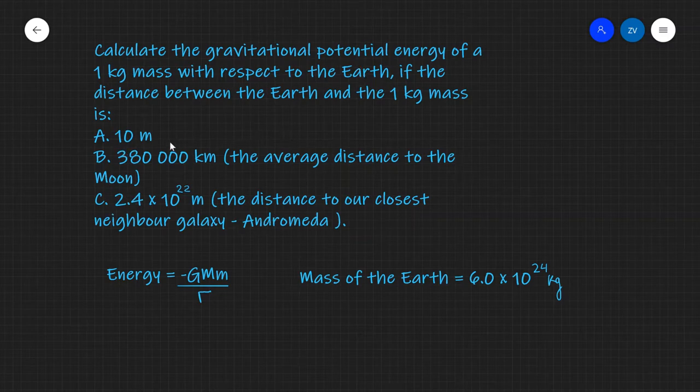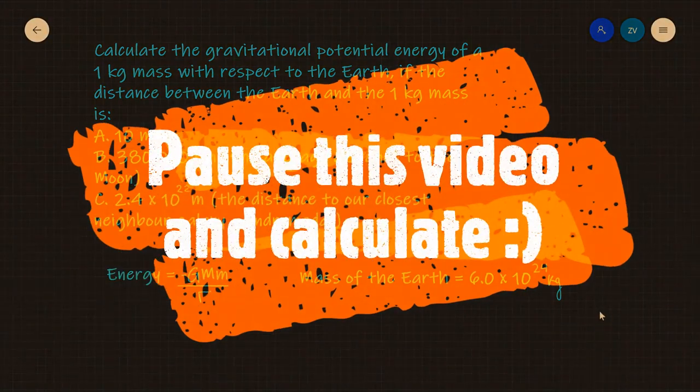So that's one calculation for A, one for B and one for C. Over here you have the formula for gravitational potential energy and the mass of the earth and this would be a perfect time for you guys to pause this video and do some calculations.